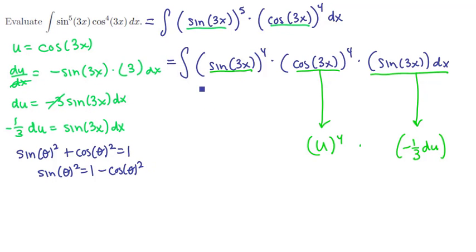So this expression being sine to the fourth is really 1 minus cosine of theta squared, or 3x squared, quantity squared. That would get me a sine to the fourth. Now I can finish the substitution. We'll have a 1 minus u squared quantity squared, and this is the integral.